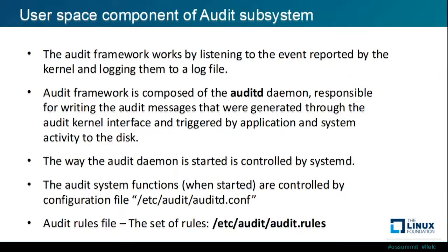The user space component of the audit subsystem works by listening to events reported by the kernel and logging them to a log file. One of the key components is the audit daemon process, which is responsible for writing the audit messages generated through the kernel audit interface, triggered by applications and system activity. The way the audit daemon is started is controlled by the system, and its functions are controlled by the configuration file: auditd.conf.